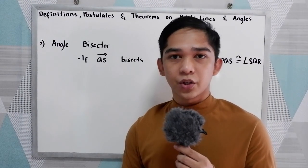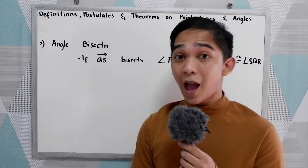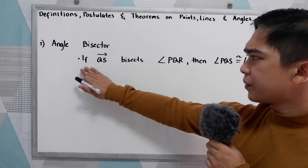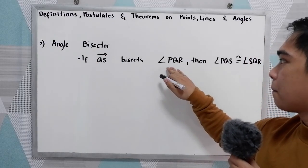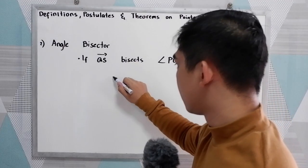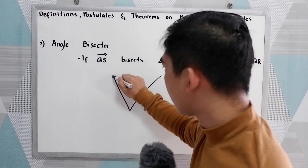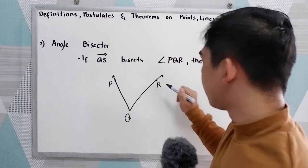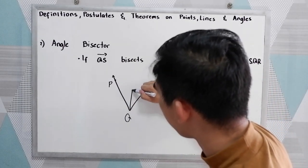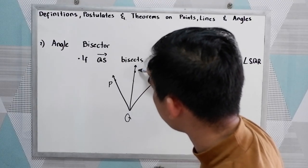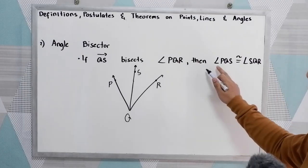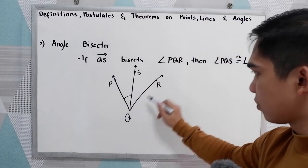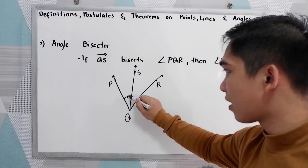Let's have our second definition. We have the angle bisector. When we say angle bisector, it divides the angle into two congruent or equal angles. Let's say QS bisects angle PQR. So if we have angle PQR, then QS bisects the angle. So angle PQS is congruent to angle SQR.